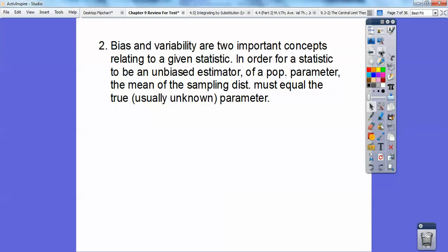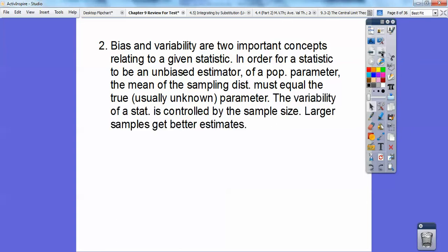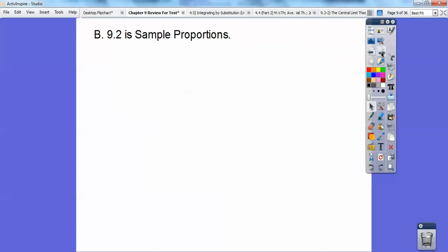In order for statistics to be an unbiased estimator of a population parameter, the mean of the sampling distribution must equal the true and usually unknown parameter. So if I got the mean of all my sampling distributions, the mean of my sampling distributions is going to equal the population mean. And the variability of statistics is controlled by the sample size. Larger samples get better estimates.